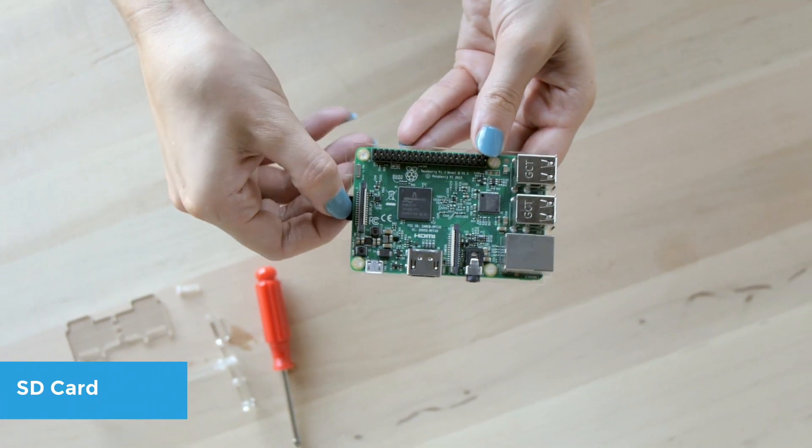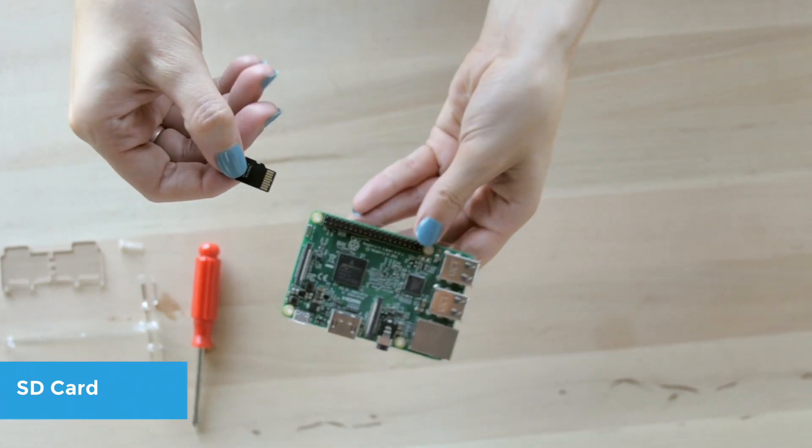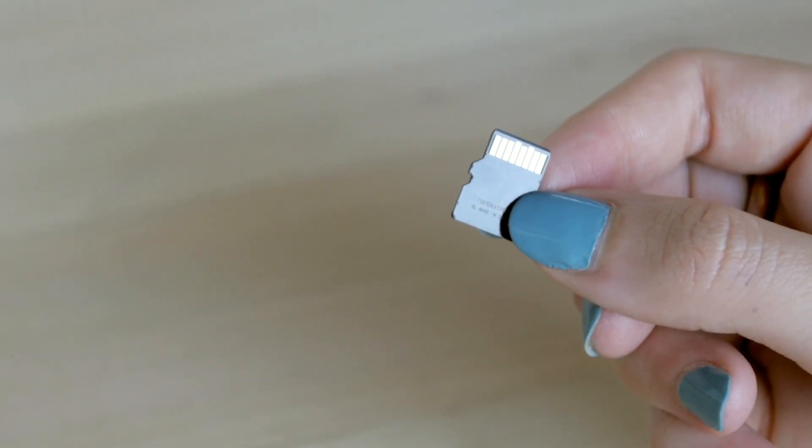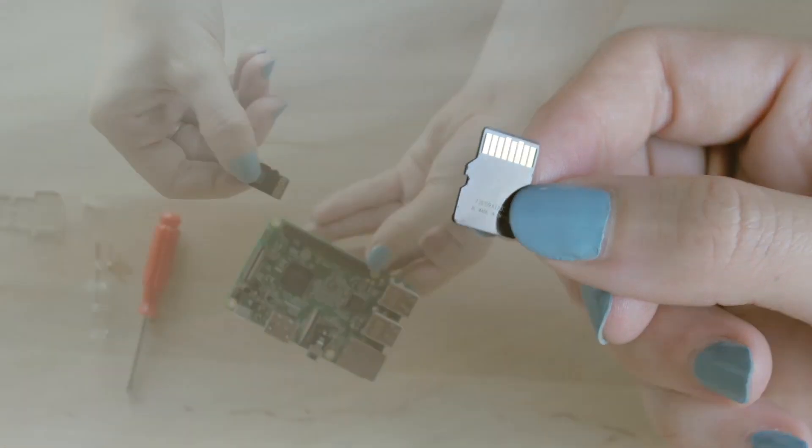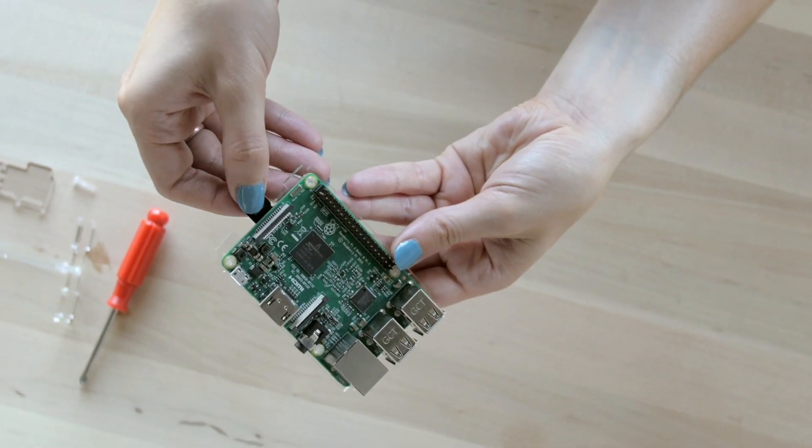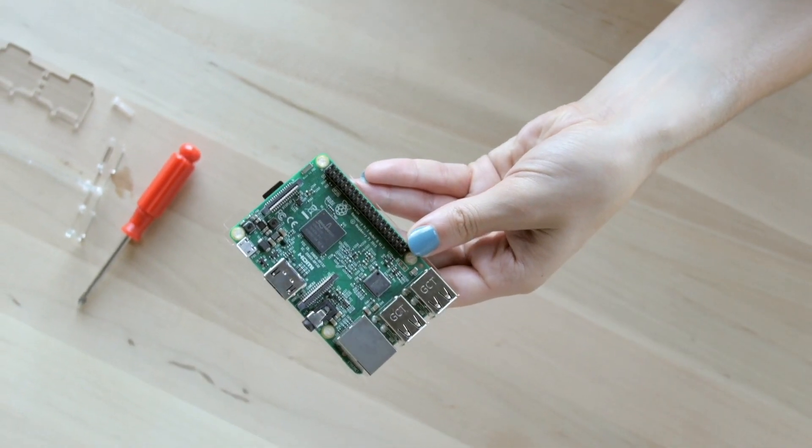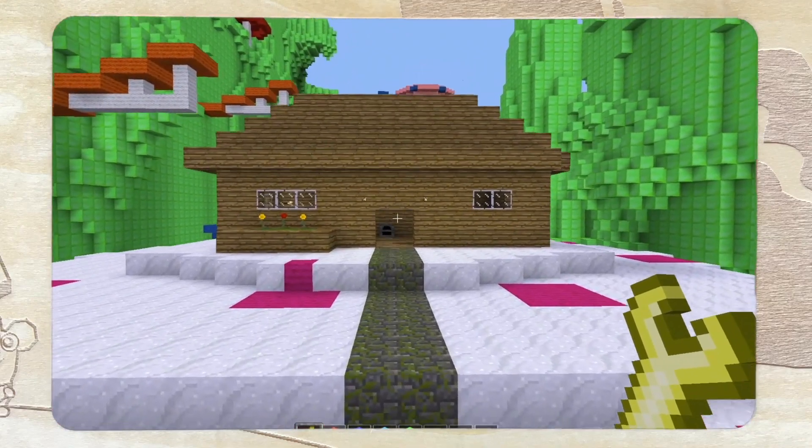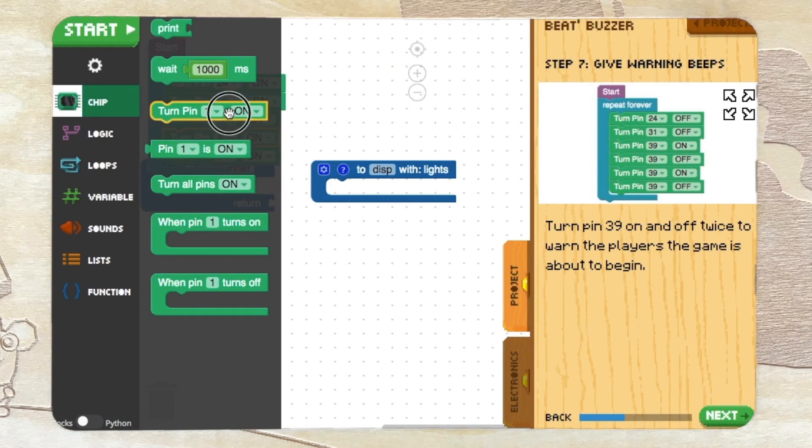The SD card stores all of the software for the Piper computer. It allows you to use our software when inserted into the Raspberry Pi and for students to save what they have completed in Story Mode and Piper code for future use.